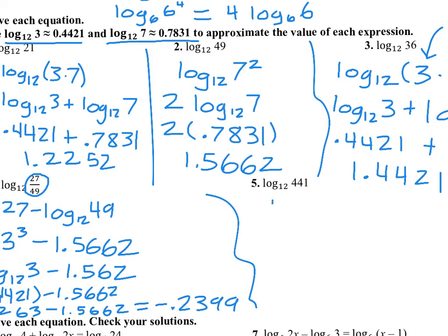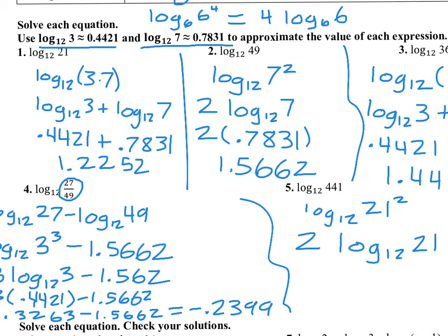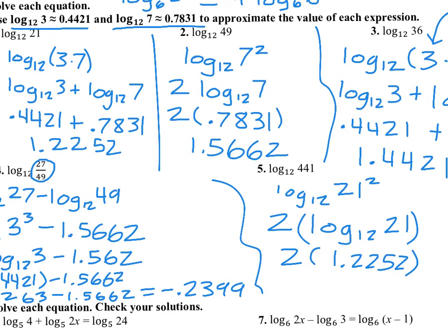For number 5, the argument is 441. We recognize that 441 is a perfect square — it equals 21 squared. So I can move the 2 to the front. On number 1 we found that log base 12 of 21 equals 1.2252, so we plug in that answer and multiply by 2 to get 2.4504.